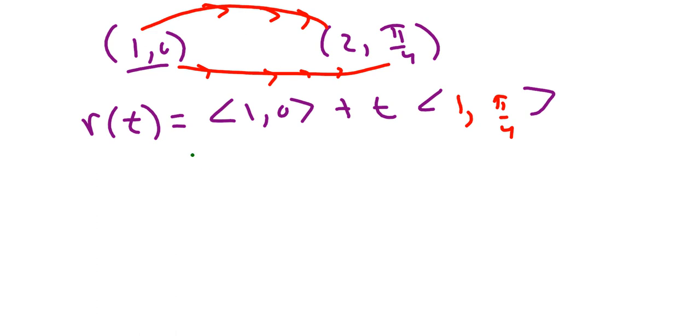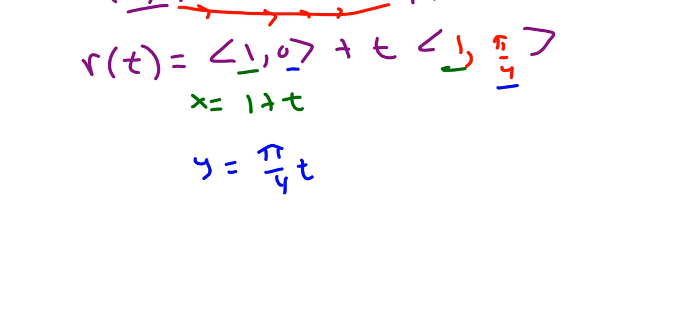So if I want, I can write this as x equals 1 plus t. That's from here and here. And I can do y equals 0 plus π/4 times t. So just π/4 times t. So now what I'm going to do is I'm going to plug in all this stuff. I'm going to plug in this stuff. Oh, by the way, my domain is just going to be from 0 to 1 because if I add this whole vector, I would land at the second point.